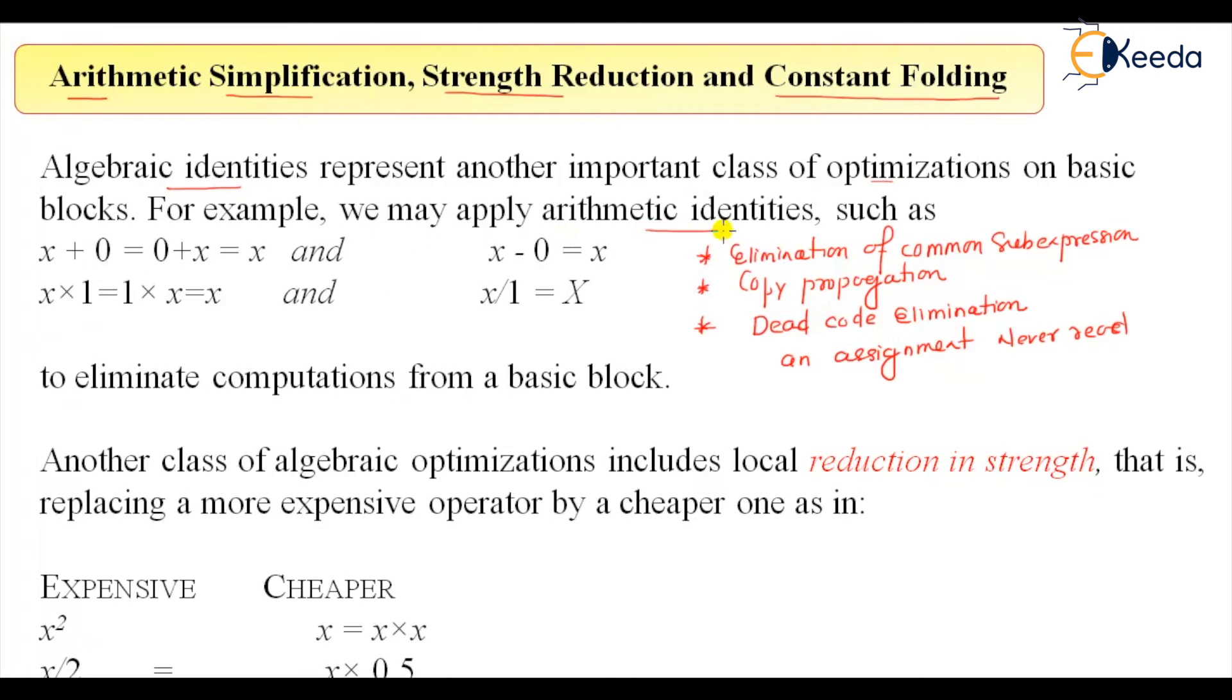For example, algebraic identities - we may apply the arithmetic identities such as: identity x + 0 will give 0 + x which gives x, or x - 0 will give x, x multiplied by 1 or 1 multiplied by x is equal to x, and x divided by 1 is also equal to x. So when I know that I'll get the same value, there is no point in consuming cycles or executing the instruction of addition,